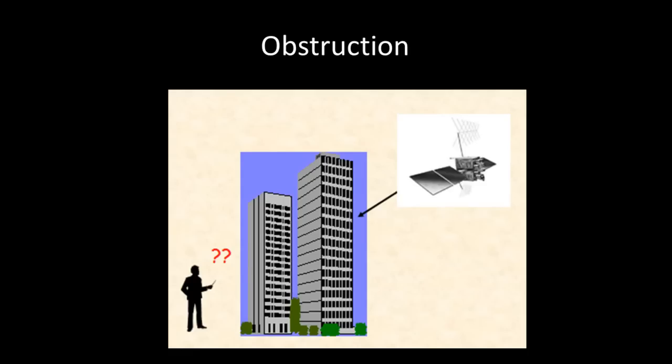One obvious inaccuracy source is obstruction. GPS receivers do not work well in areas with too many obstacles, such as forests, cities, and steep mountains.